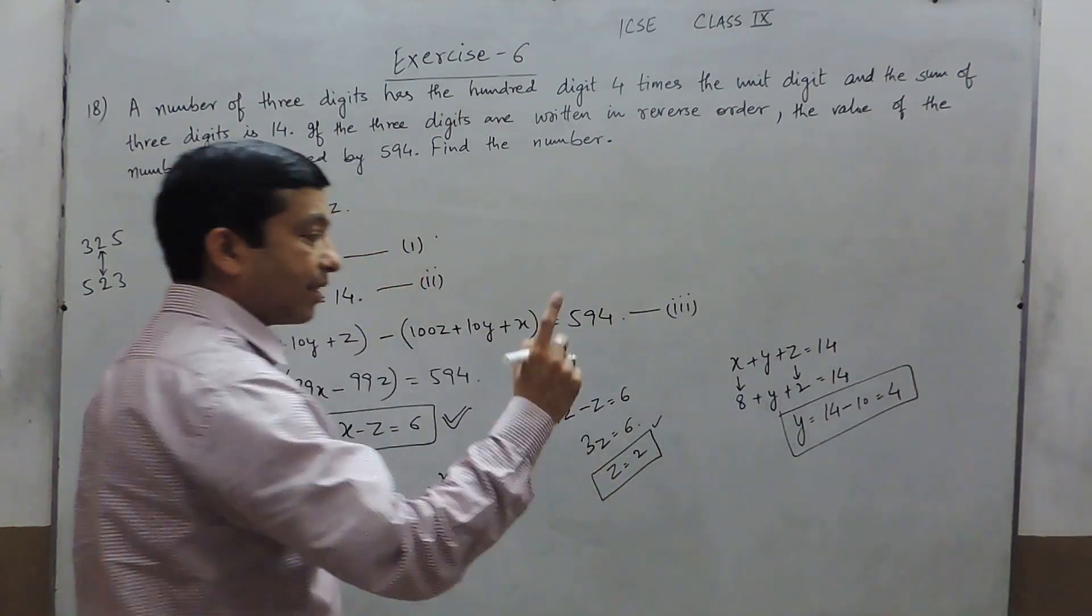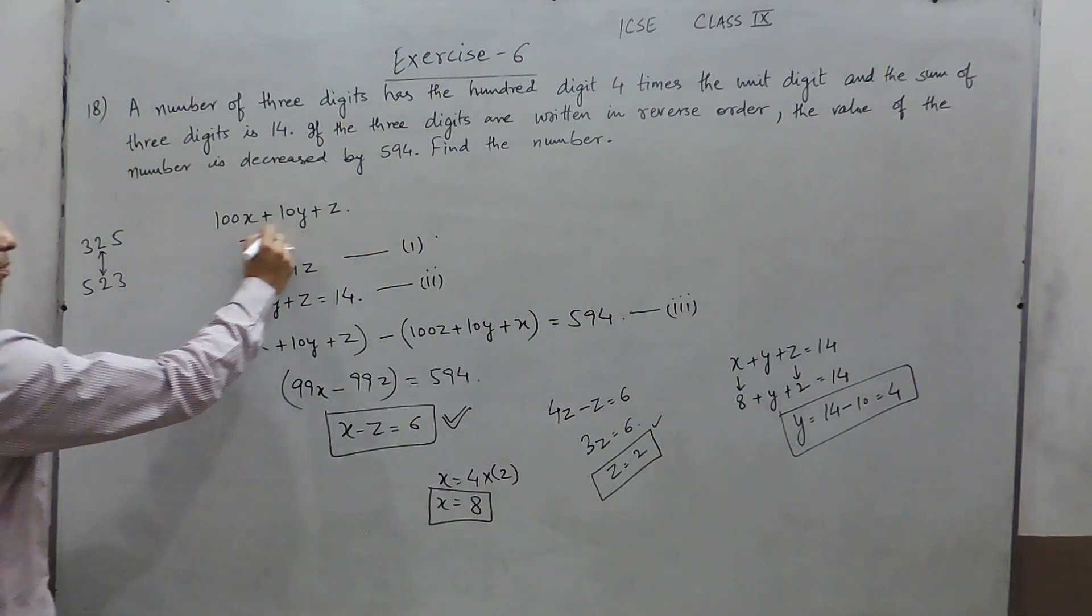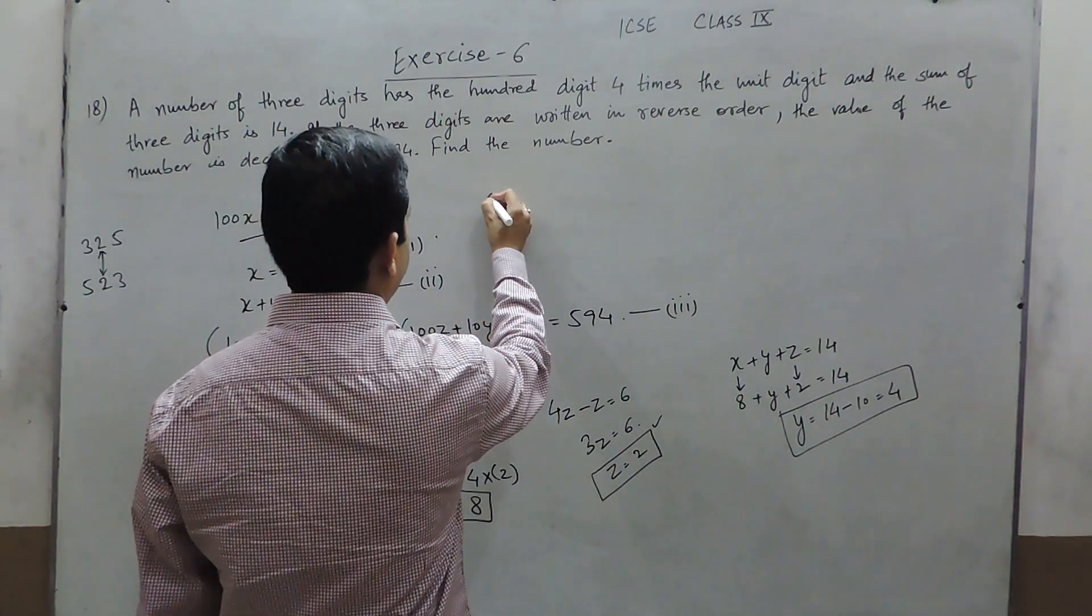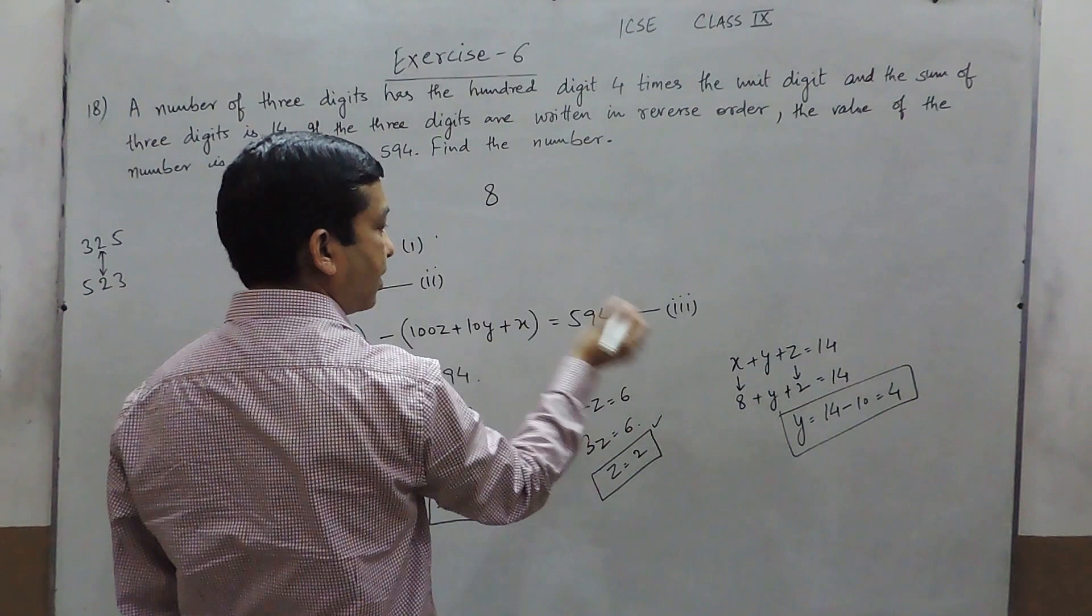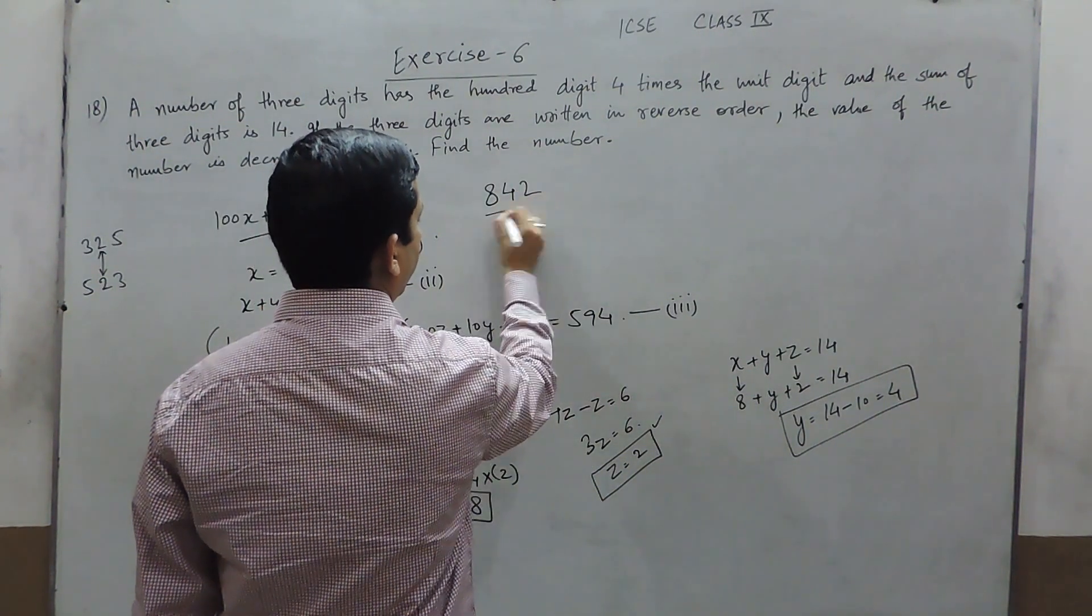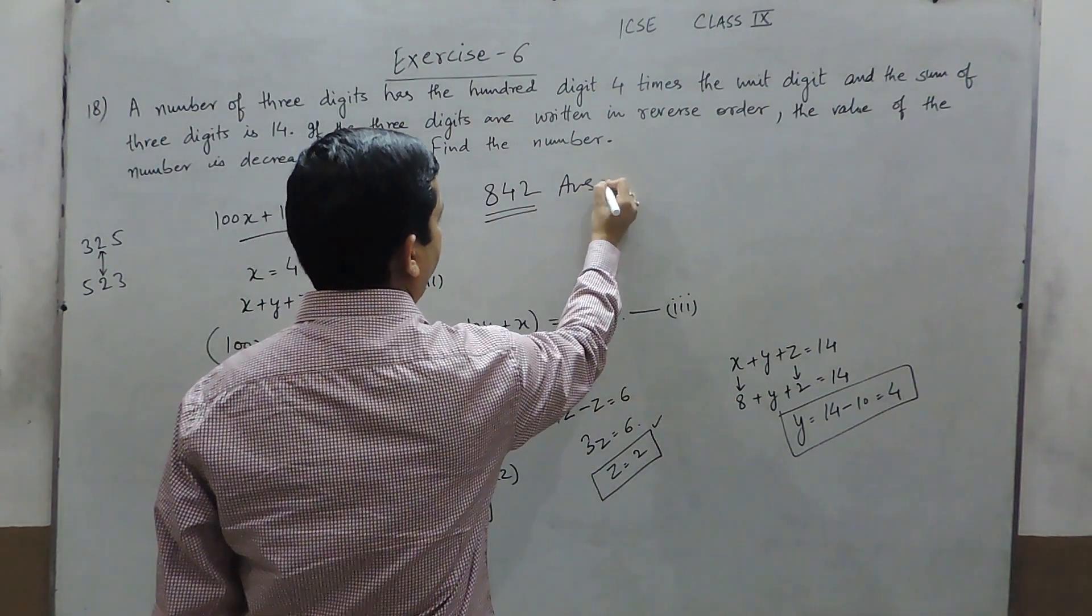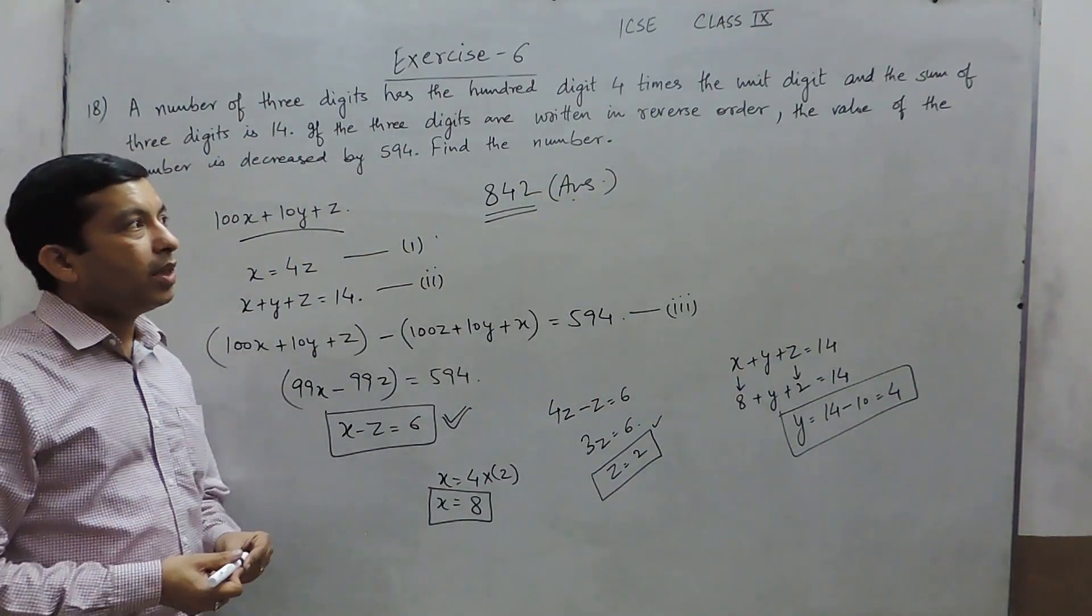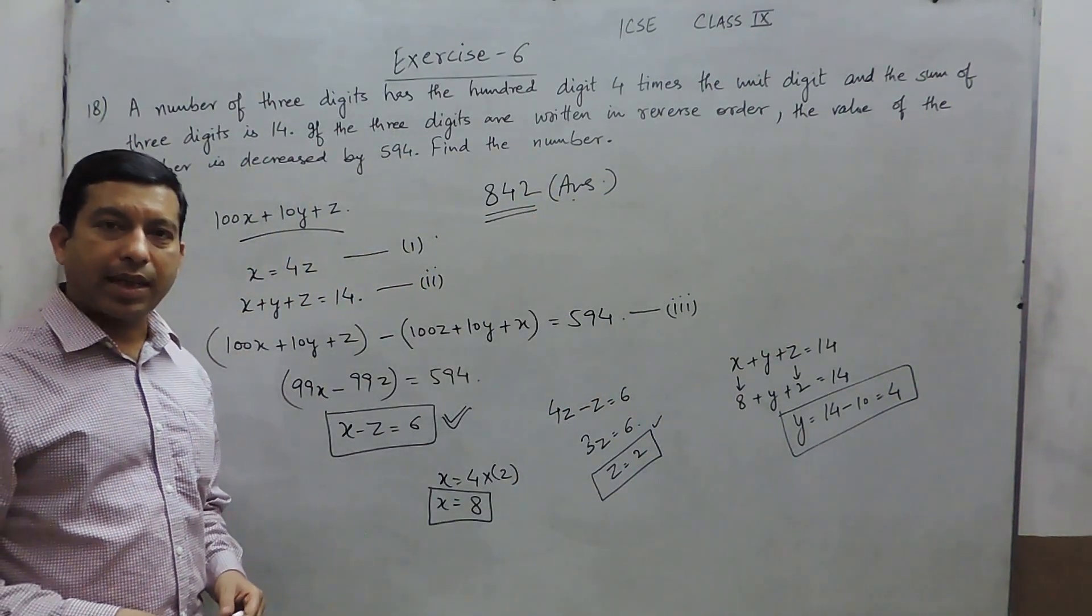Now we know the values of x, y and z, and our number was 100x plus 10y plus z. So this will be written as 842. This is the original number for which we are talking about and this is the correct answer. If you have any problems, you can contact or email us. Thank you.